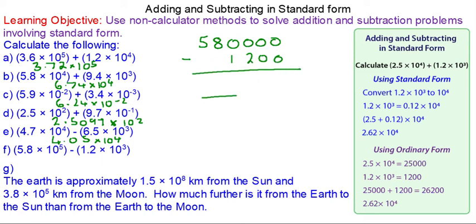We'll subtract 1,200 from 580,000, which gives us 578,800, or 5.788 × 10⁵.